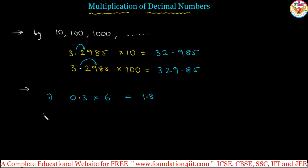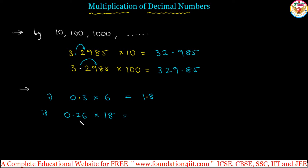One more example: 0.26 multiplied by 18. Without considering the decimal point, this is 26 multiplied by 18, which equals 468. After the decimal point in 0.26 we have 2 decimal places. So from the right side, leave 2 decimal places and place the point. Therefore, 0.26 into 18 equals 4.68. This is the method for multiplication with a whole number.